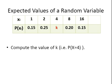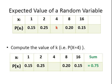So, compute the value of k, i.e. the probability of X equal to 4. How do we do that? Well, first off, we sum up what we have so far, the probabilities so far. So 0.15 plus 0.25, here and here, and that's 0.2 and 0.15, we get a summation of 0.75.